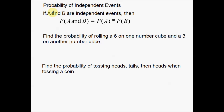So if the two events we're talking about, A and B, are independent of one another, then the probability of them both happening is equal to the probability of the first one happening times the probability of the second one happening. Basically, I just take their individual probabilities and multiply them together.